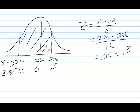So then remember, when we're finding the area between two points, we look both of these points up. We look up .3 and we will get 61.79%.